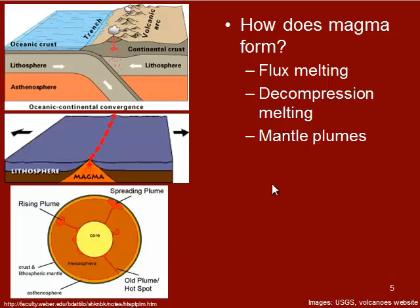At areas where we have hotspots like Hawaii or Yellowstone, we call those mantle plumes. For some reason — it's still not fully understood — we have a mantle plume that originates down at the core-mantle boundary that then rises very quickly to the surface in the middle of a plate. So we have volcanic activity that's not associated with an actual plate boundary. Those are called mantle plumes.